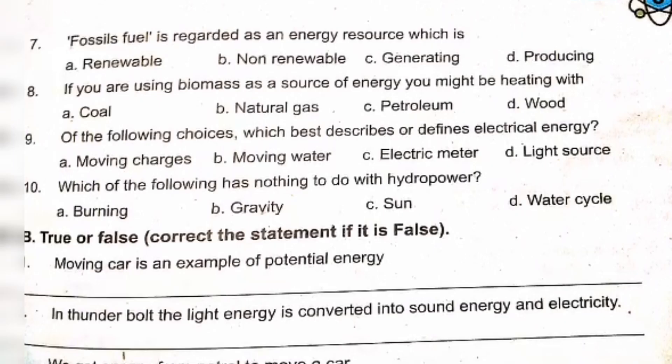Fossil fuel is regarded as an energy resource which is non-renewable, option B. If you are using biomass as a source of energy, you might be heating with option D: wood.